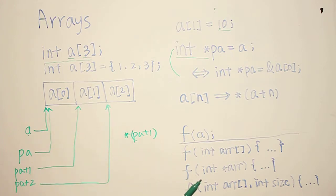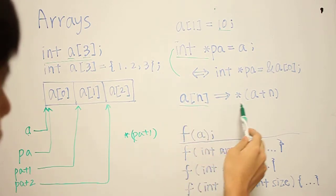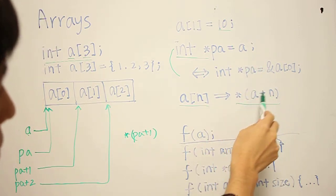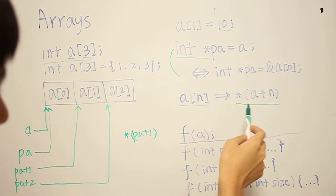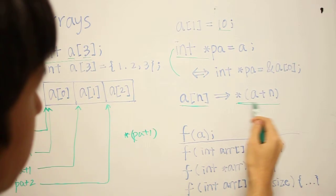In fact, what C compilers actually do behind the scenes is that whenever it sees a bracket notation like this, A bracket N, then it converts it to this expression. So it's basically the address of the first element plus the number that you put in the brackets, and then dereferencing it. So these two are equivalent expressions.